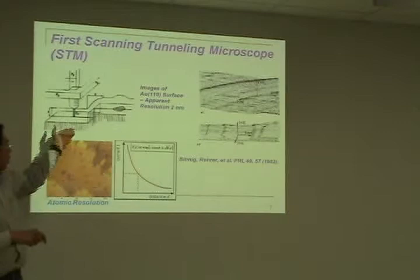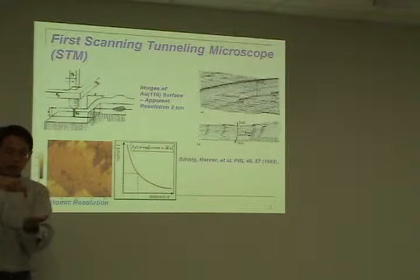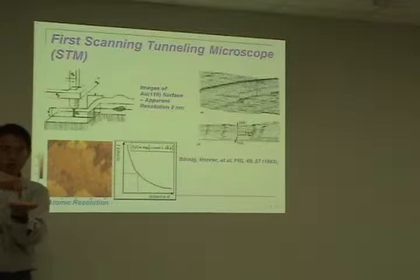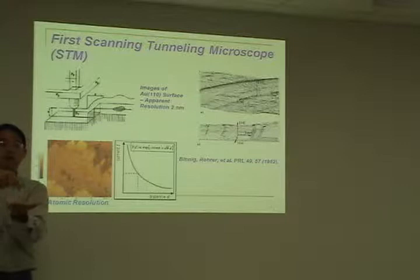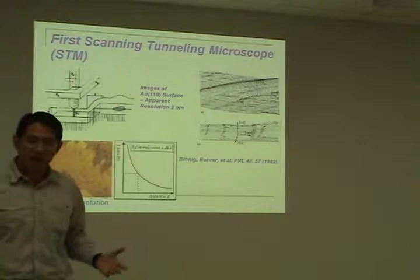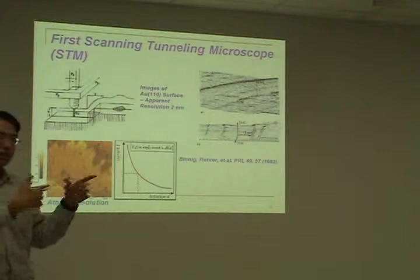The way STM works is it approaches a metallic tip on a metallic sample. It's very close but not in contact — separated by a few angstroms. At that distance, electrons will tunnel through from the tip to the sample or from the sample to the tip. This benefits from quantum mechanics: there is a tunneling probability that is prohibited in classical mechanics but possible in quantum mechanics. So basically this tool collects the tunneling current during scanning of the surface.